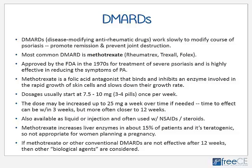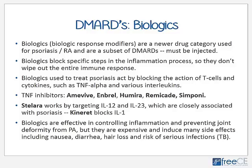If methotrexate or other conventional DMARDs are not effective after about three months, so-called biological agents are considered. Biologics — short for biologic response modifiers — are a relatively newer drug category used for psoriasis and RA, and are a subset of the DMARDs; however, they must all be injected. These biologics block specific steps in the inflammation process and do not wipe out the entire immune response the way corticosteroids do.